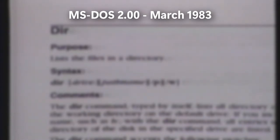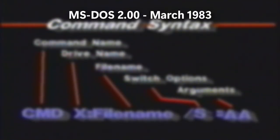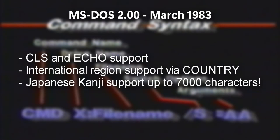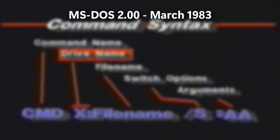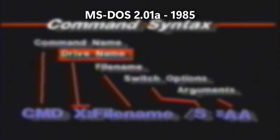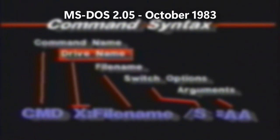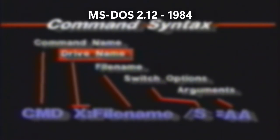Along with the release of the 2.x MS-DOS family, it brought a broader variety of uses, such as CLS and echo support, international support via the country command, conflict assist, and Japanese kanji character support for up to 7,000 characters. OEMs also received versions of 2.x, such as 2.01 for Wang, 2.05 for the DEC Rainbow, Eagle, and Compaq.